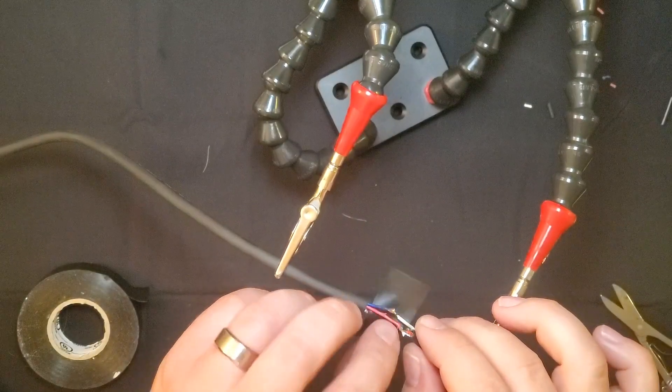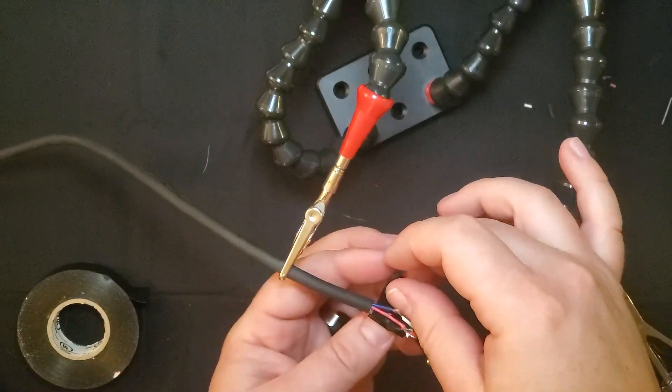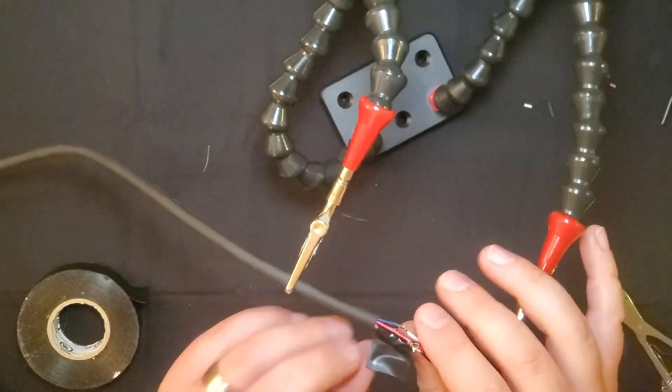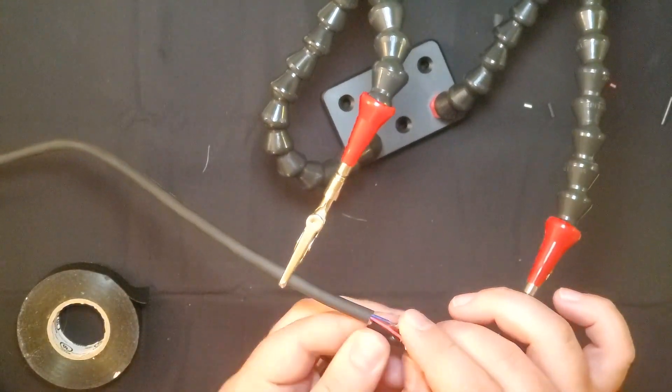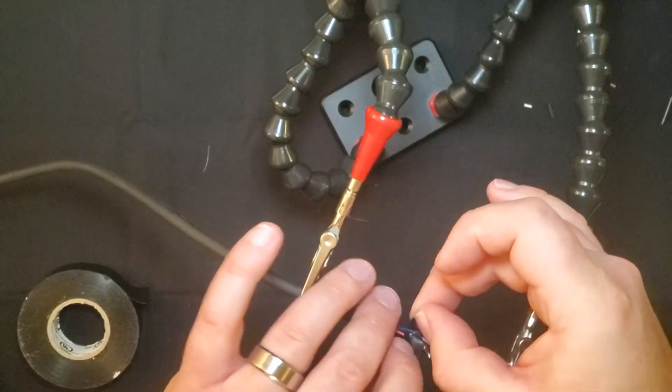I'm going to start by wrapping tape around the copper wire there, and then onto the white slash blue wire.